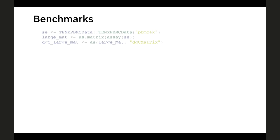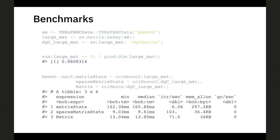For benchmarking, I took some single cell datasets — in this case the PBMC 4K dataset, with about 4000 columns and 20,000 rows. I think it's roughly 500 megabytes in memory as a dense matrix and it's 96% zeros. As a first example, I ran a benchmark comparing matrixStats colMeans, sparseMatrixStats colMeans, and the uppercase Matrix colMeans function. As you can see, the sparseMatrixStats package is a lot faster — you actually get a 17x speedup.